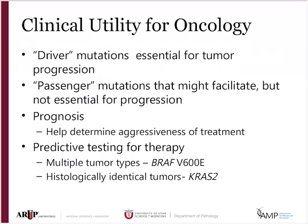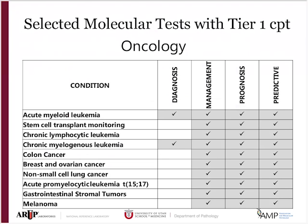In oncology, we're looking for driver mutations essential for tumor progression and passenger mutations that may facilitate progression — mainly for prognosis and predictive therapy. Looking at Tier 1 CPT codes, for oncology a few are important for diagnosis, but most are for management, prognosis, or predictive purposes.